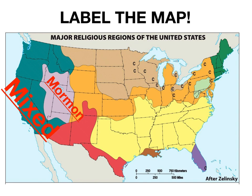Moving to the area centered around Utah, which is predominantly Mormon. Then the upper Midwest, including Minnesota, Wisconsin, North and South Dakota, which is a Lutheran area. The Midlands is also mixed, similar to the west coast, in that no one religion or sect is predominant.